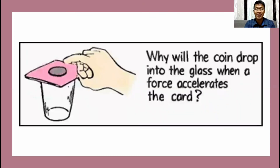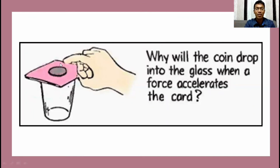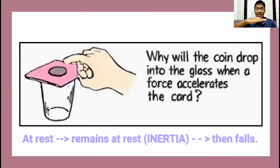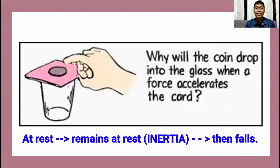This is the common experiment for inertia. Why will the coin drop into the glass when a force accelerates the card? The best strategy is a quick movement of the card. As we analyze it, the coin at this point is at rest. So when the card is moved very fast, the coin has a tendency to remain at rest — it stays behind — and so it will fall into the glass. That's our target: avoid putting force on the coin so that it will remain at rest.